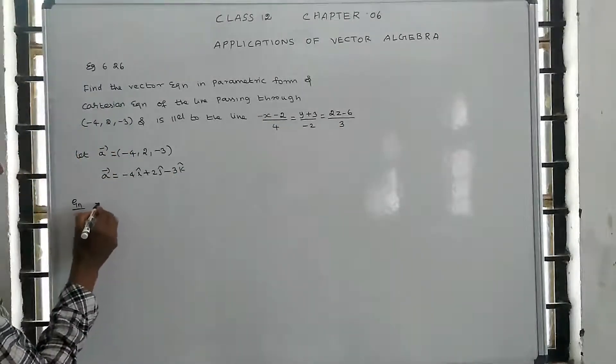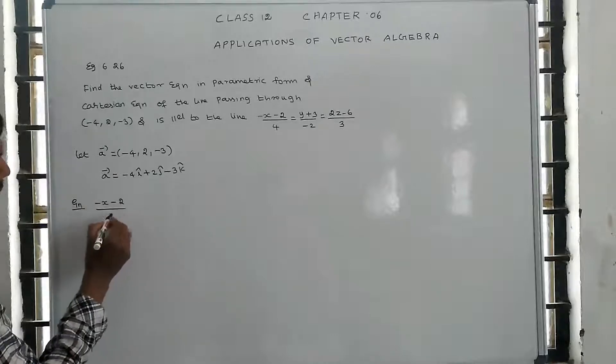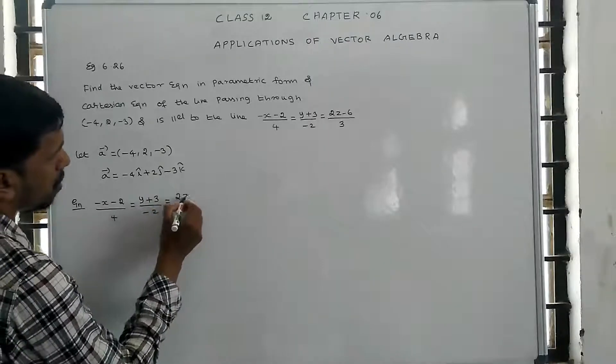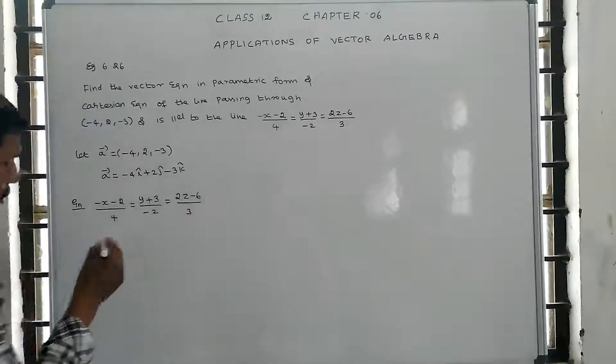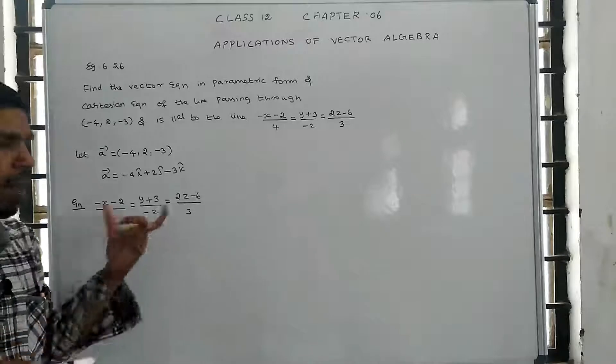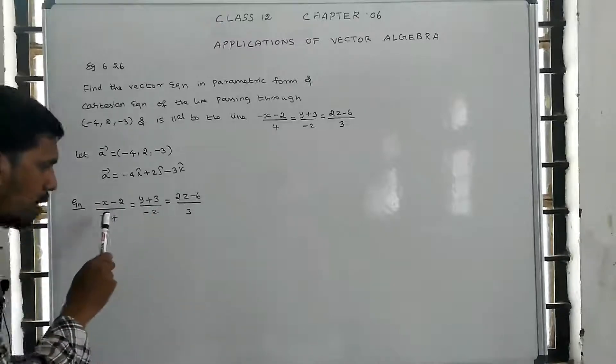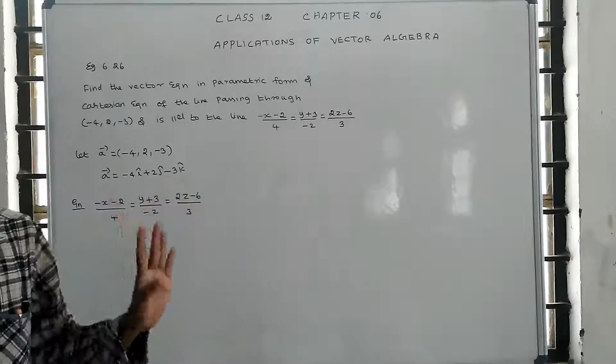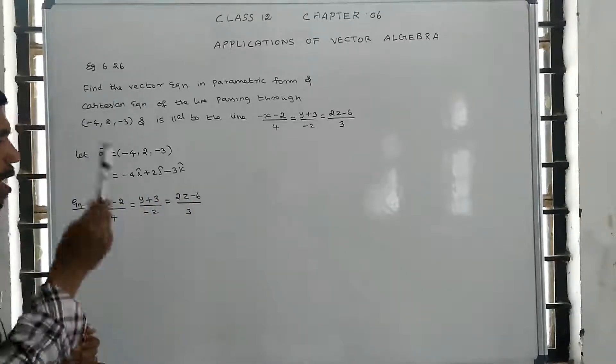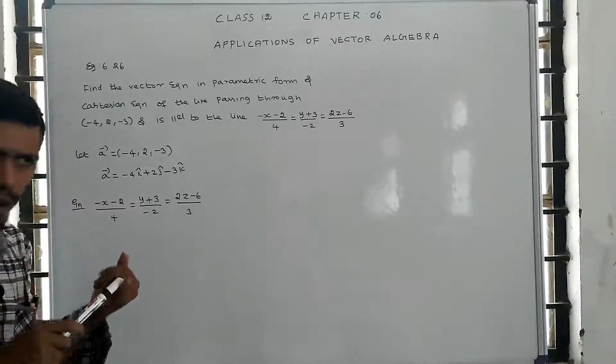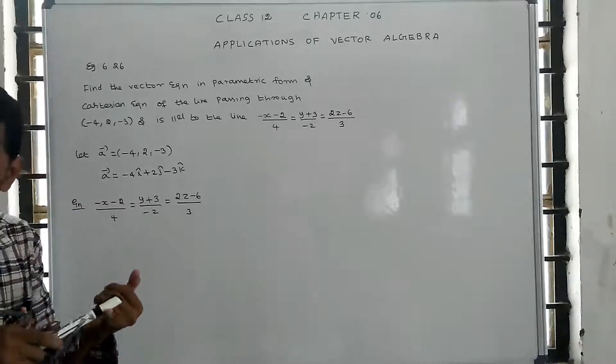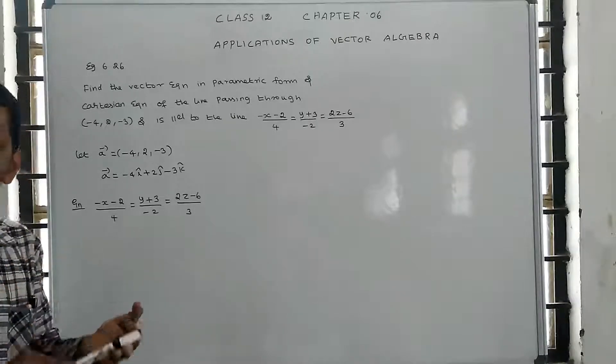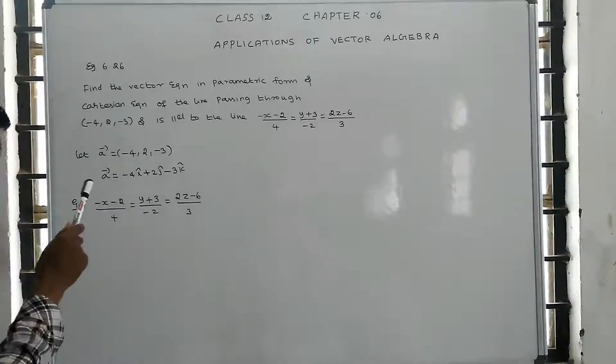And B vector is the parallel vector. The given line is (x minus 2) divided by 4 equals (y plus 3) divided by minus 2 equals (2z minus 6) divided by 3. This line is in Cartesian format. The denominator gives us the parallel vector. We need to convert this to standard form to extract the B vector components.